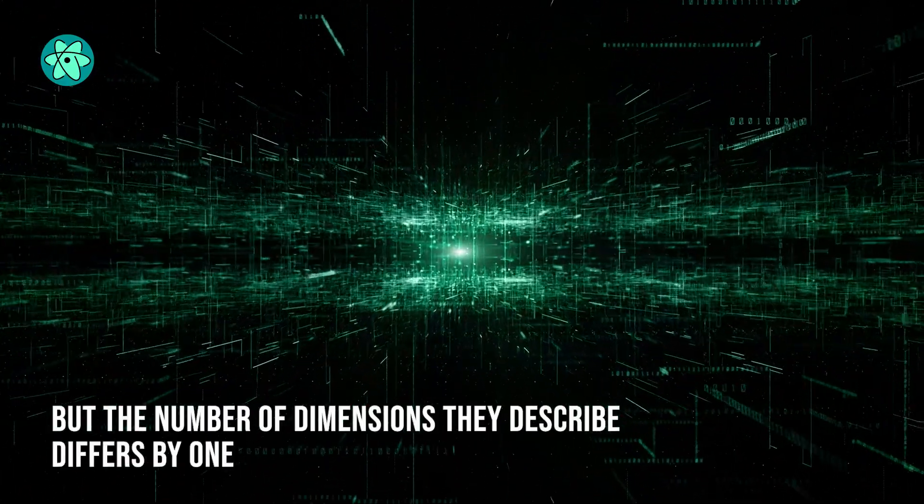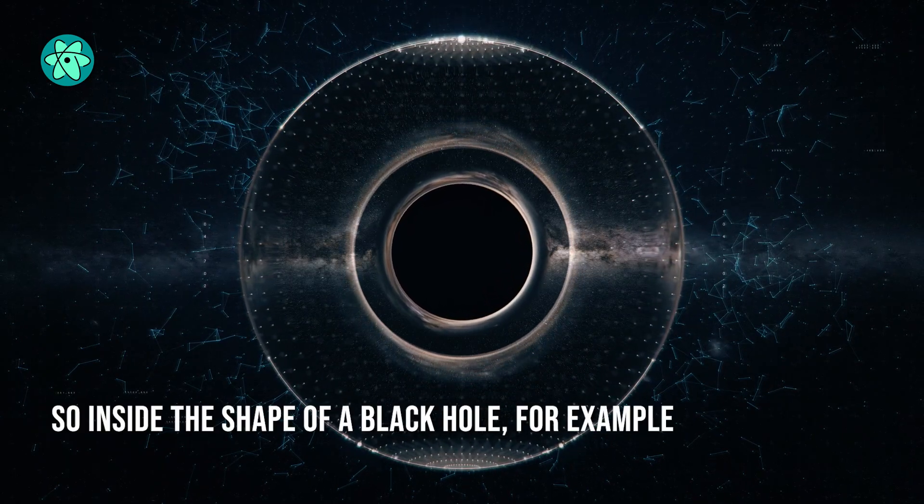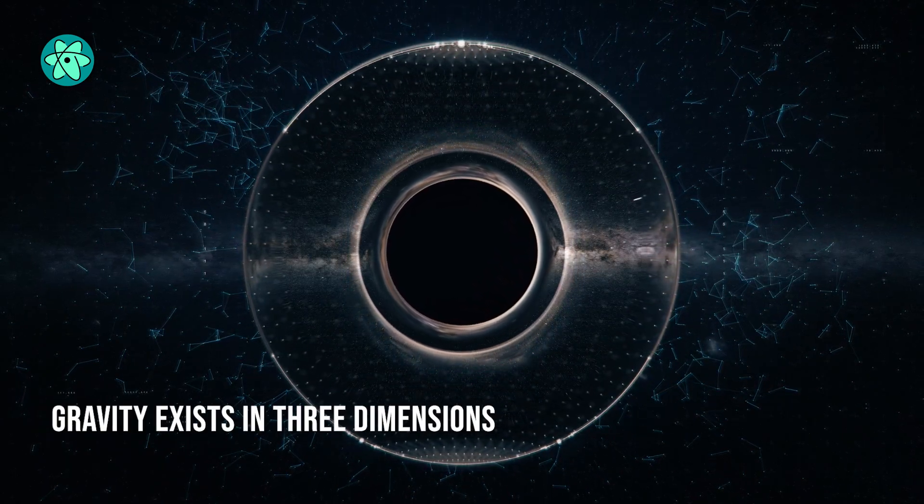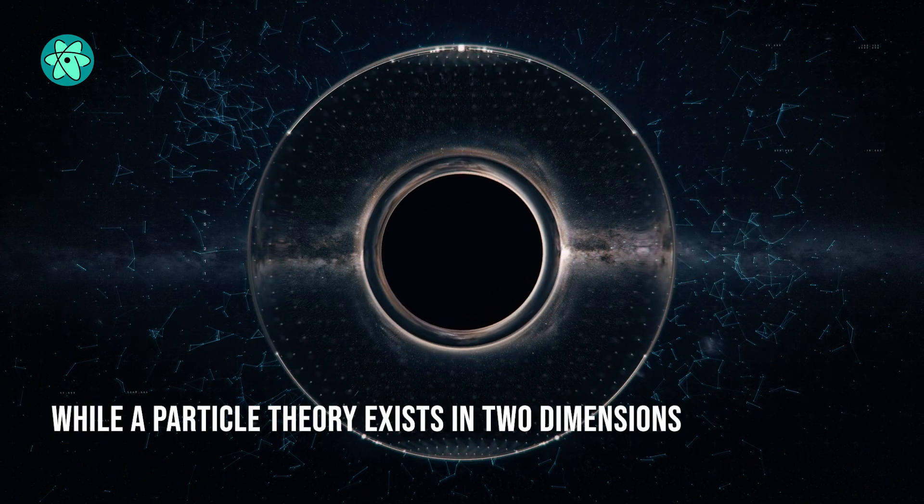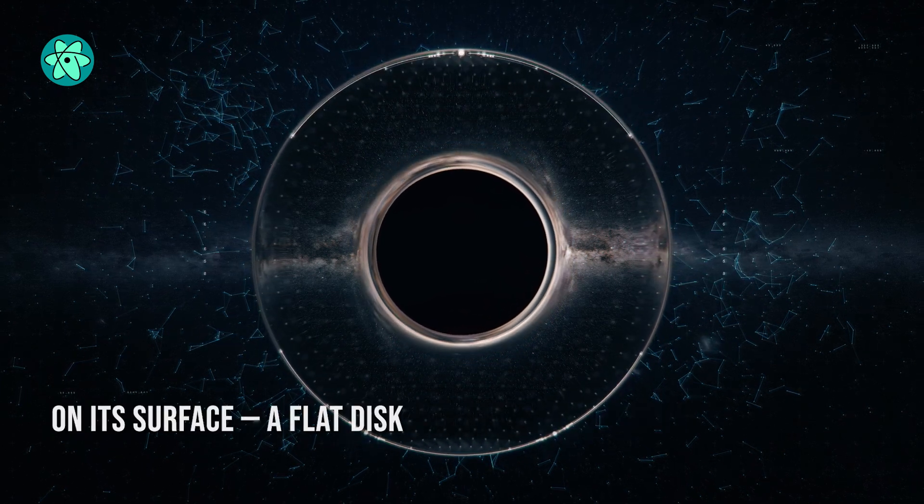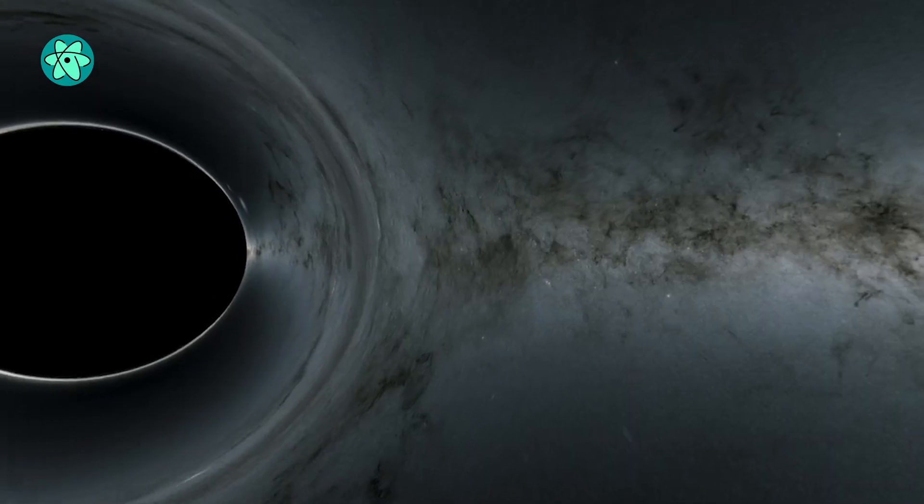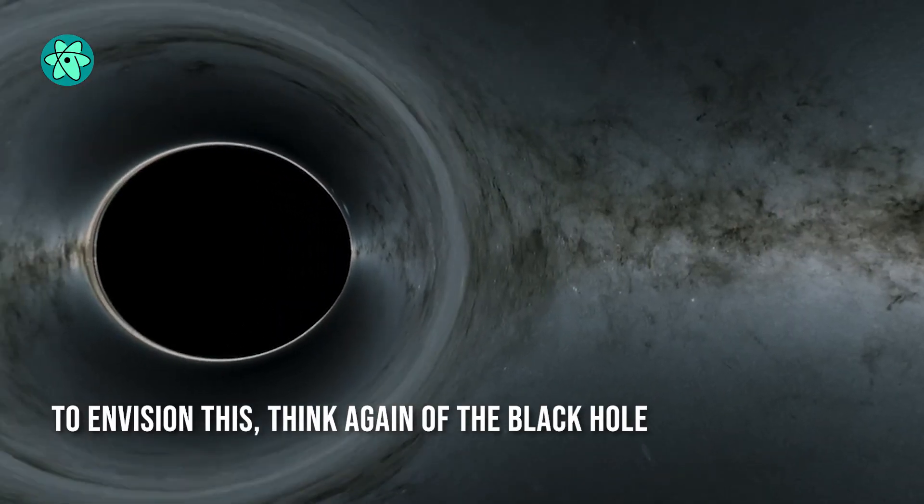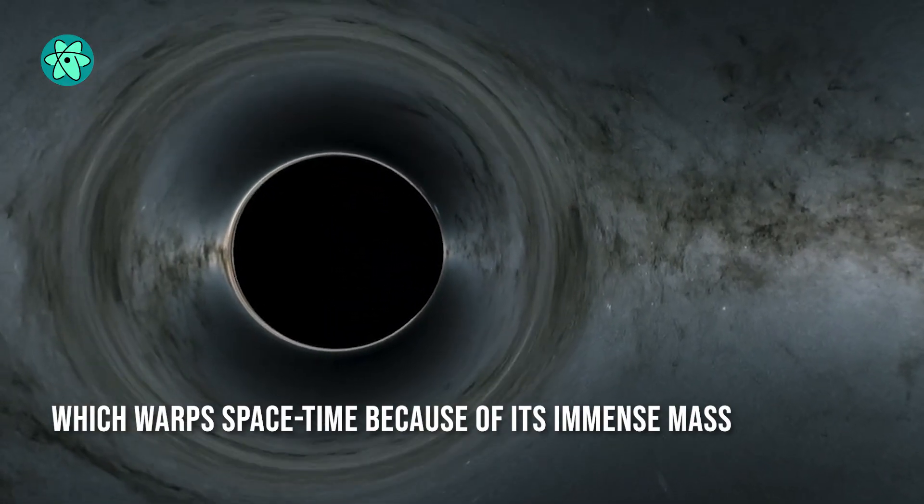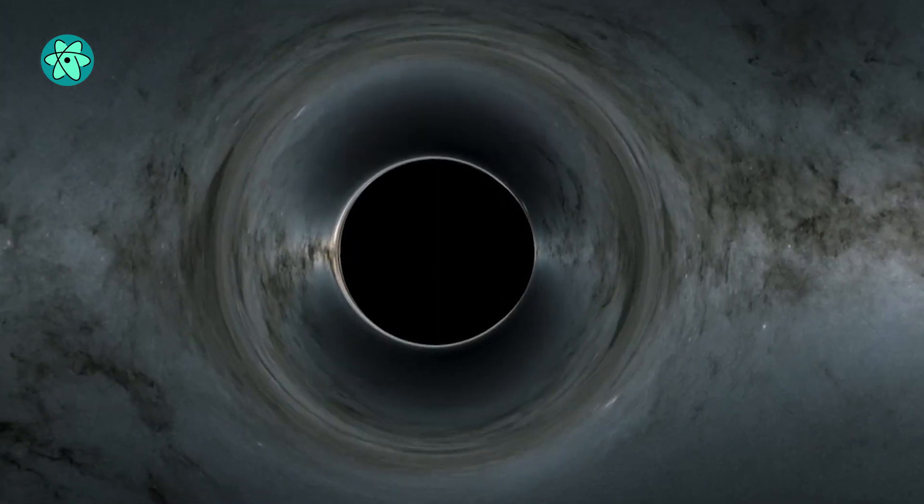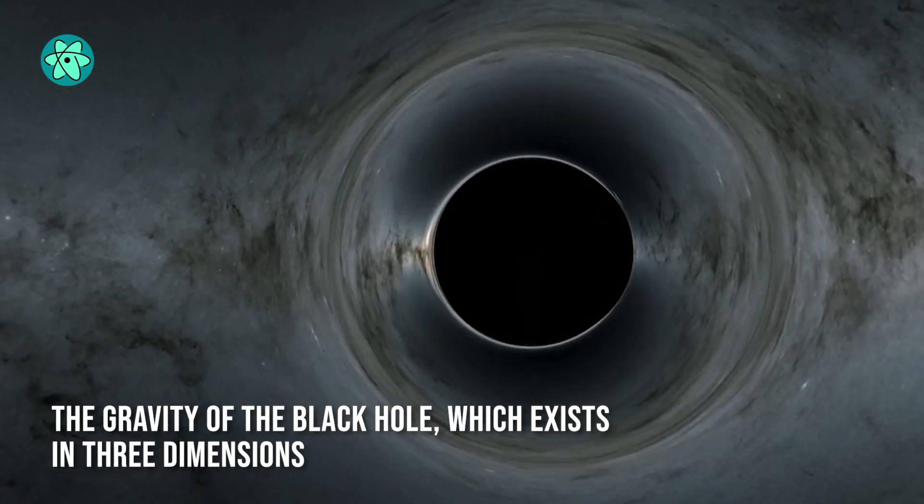Both theories describe different dimensions, but the number of dimensions they describe differs by one. So inside the shape of a black hole, for example, gravity exists in three dimensions while a particle theory exists in two dimensions on its surface, a flat disk. To envision this, think again of the black hole which warps space-time because of its immense mass.